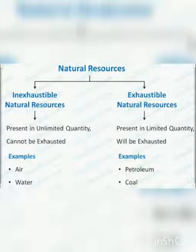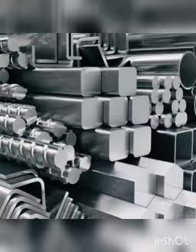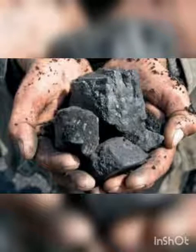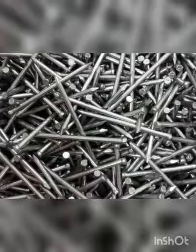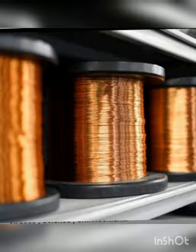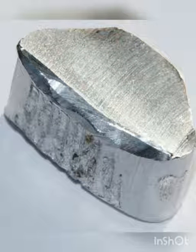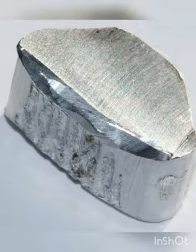First, exhaustible resources. These resources cannot be regenerated once they are used up. For example, metal, coal, and petroleum. Metals like iron, copper, and aluminium are found deep inside the earth. They cannot be created by man.